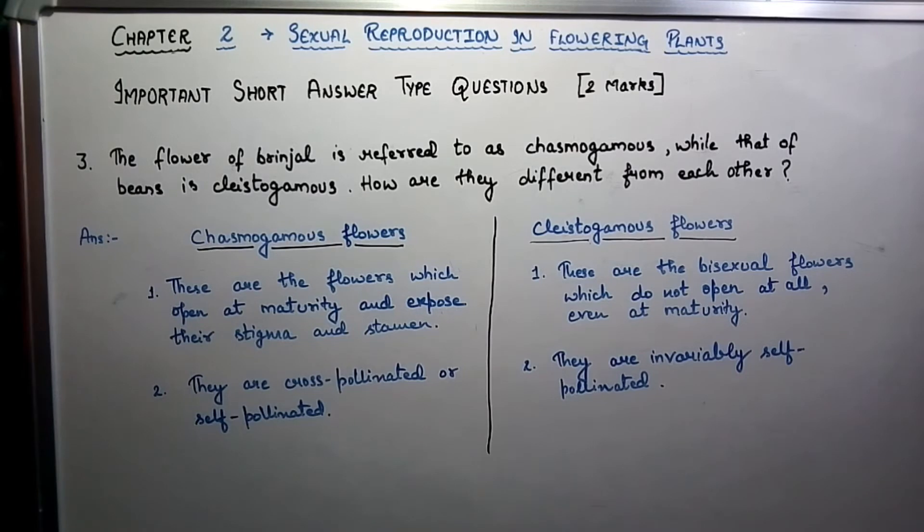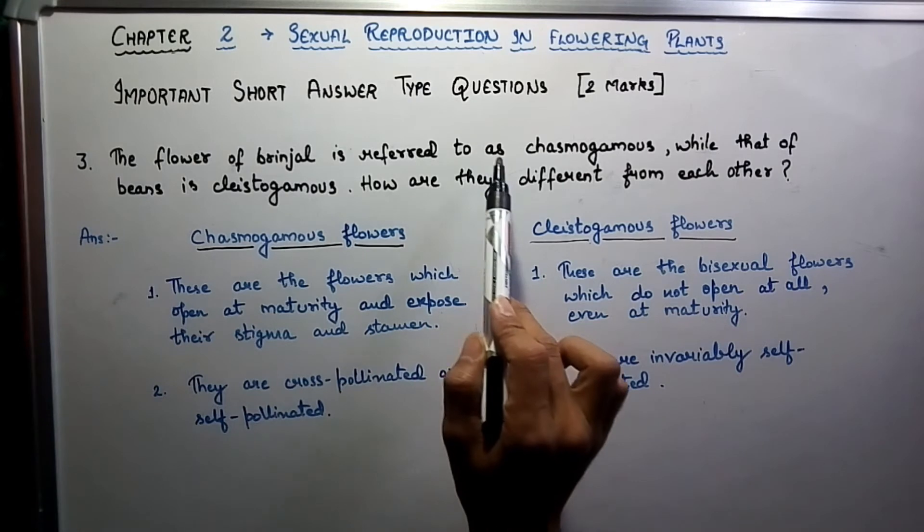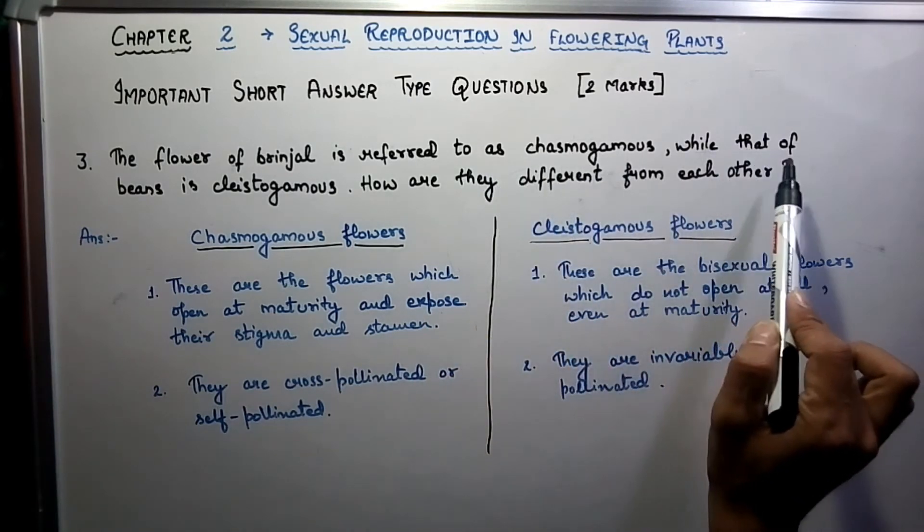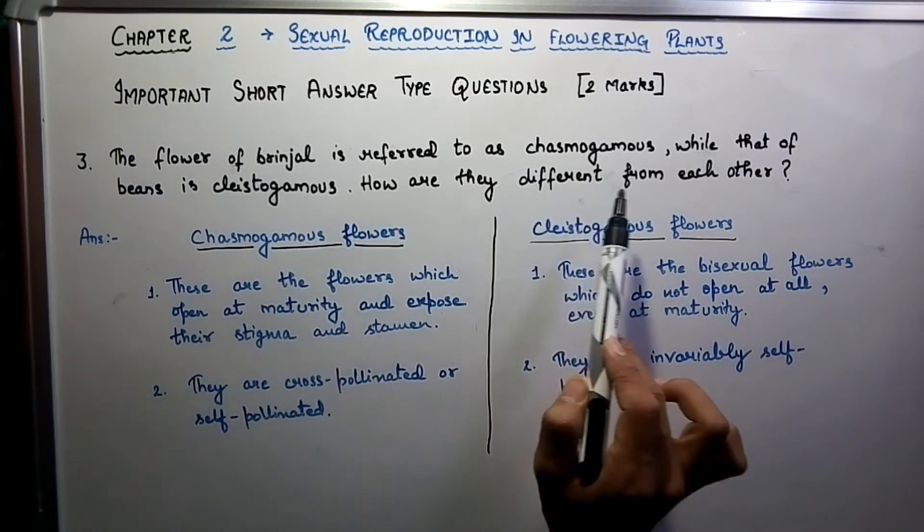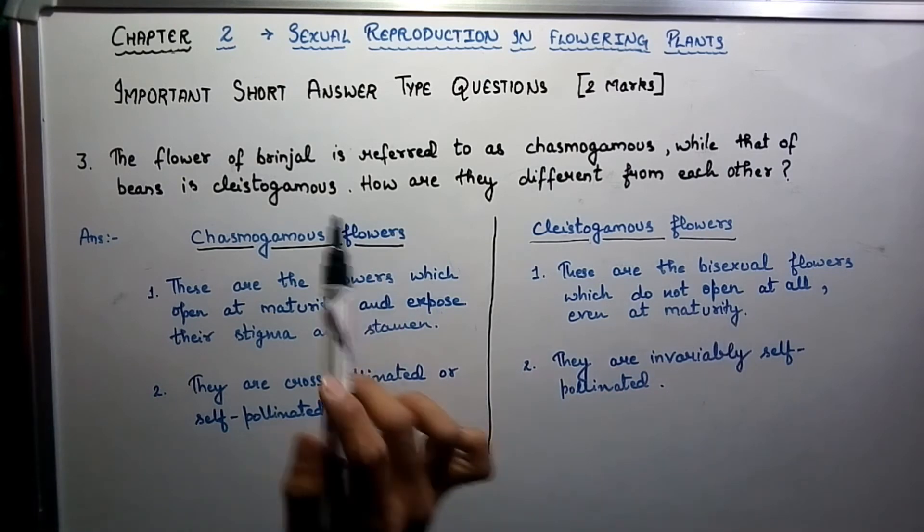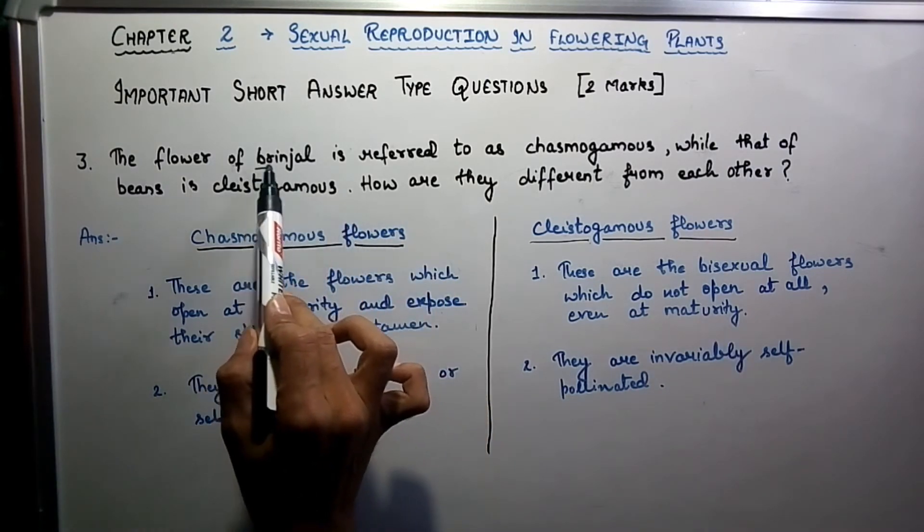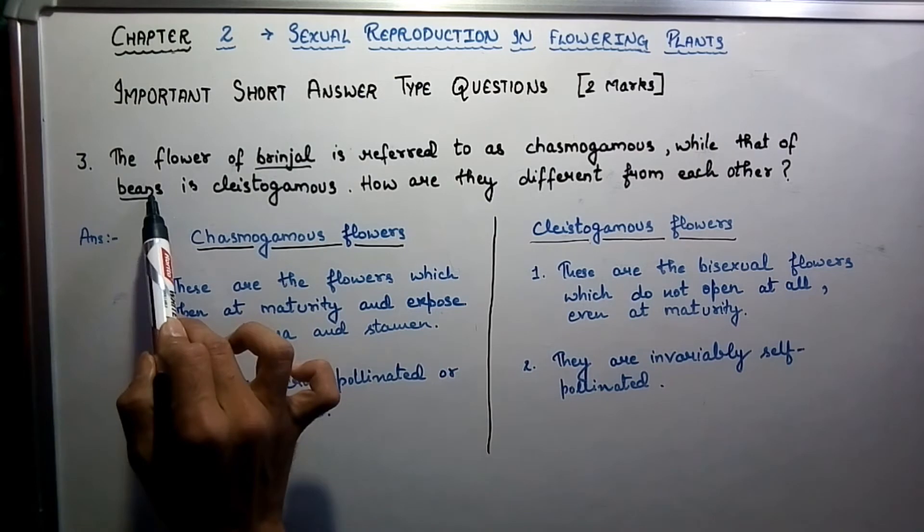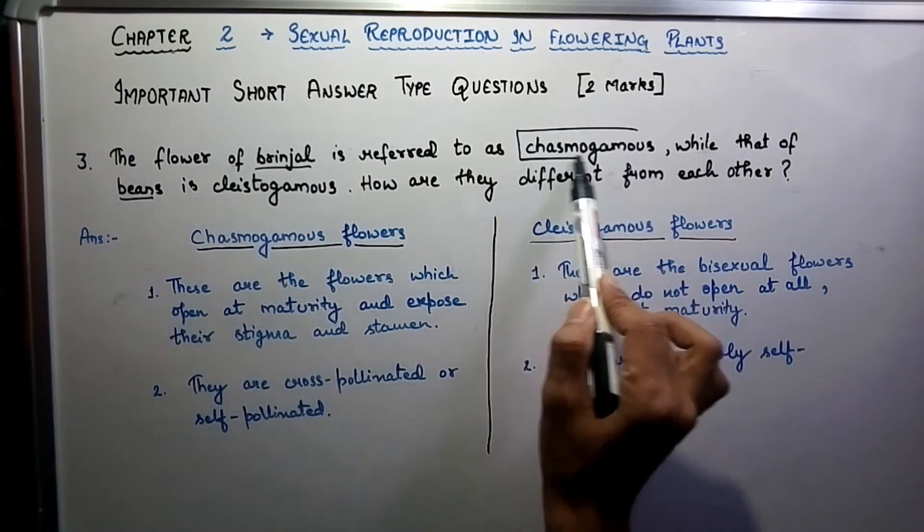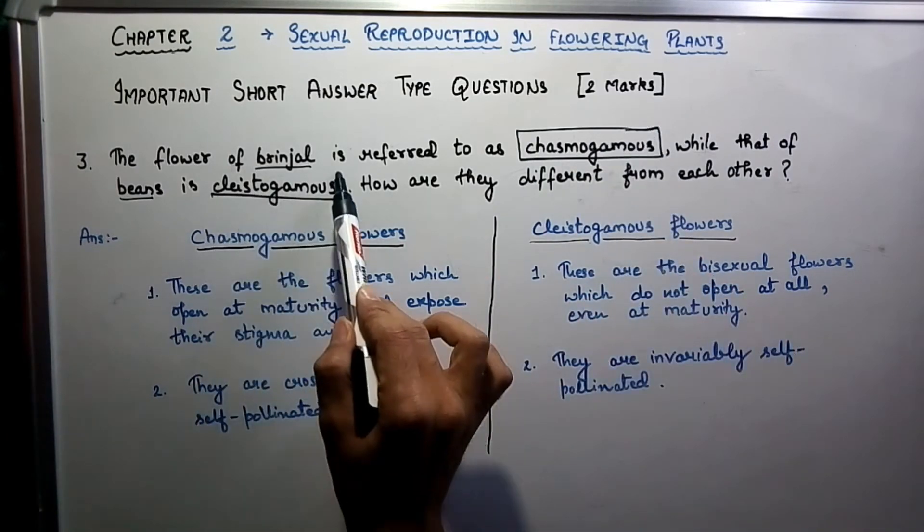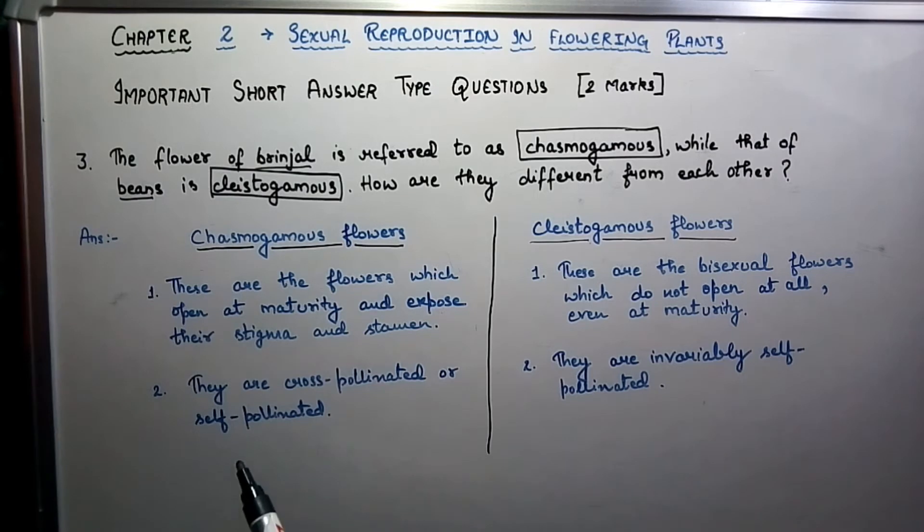The next question: the flower of brinjal is referred to as chasmogamous, while that of beans is cleistogamous. How are they different from each other? The question is not asking to differentiate between brinjal and beans flower, but to differentiate between chasmogamous and cleistogamous flowers.